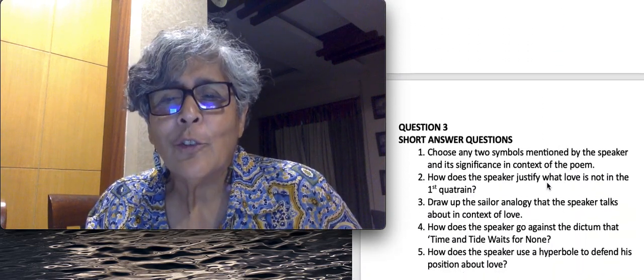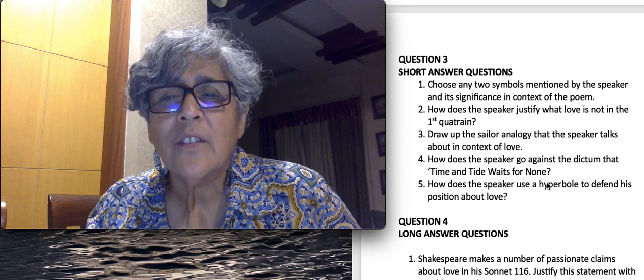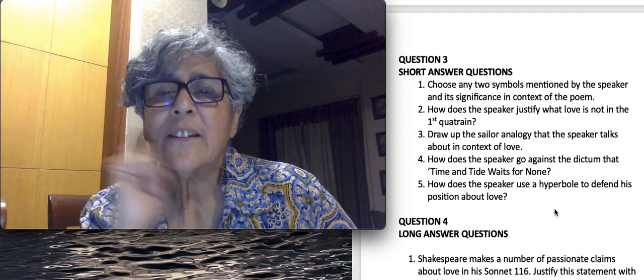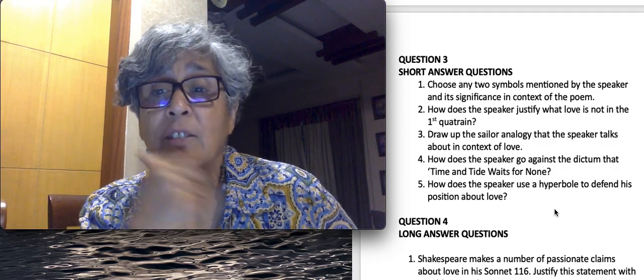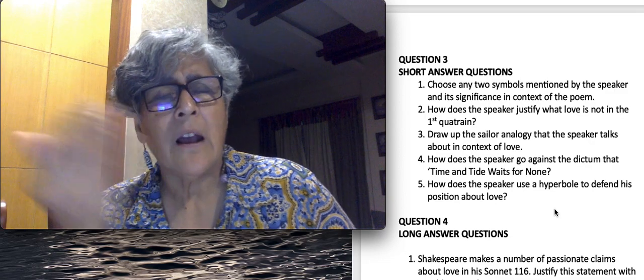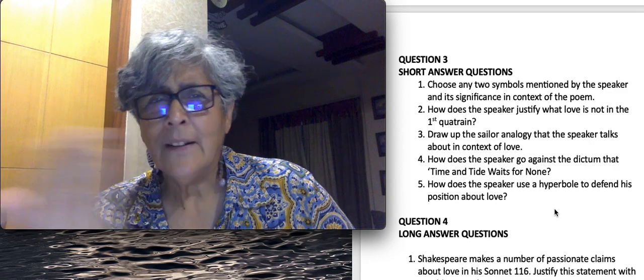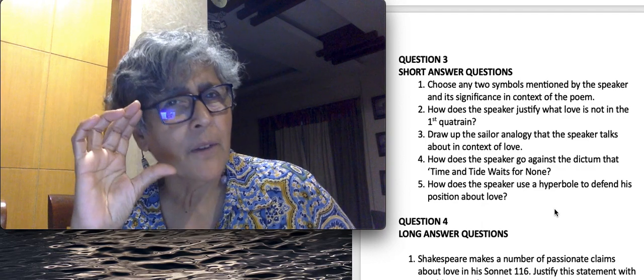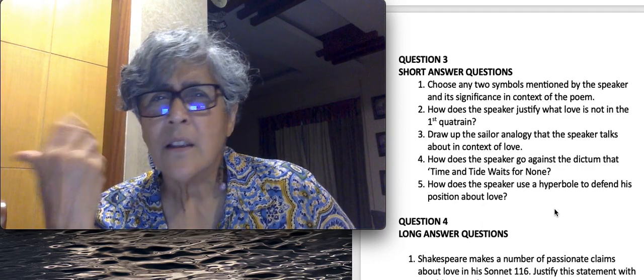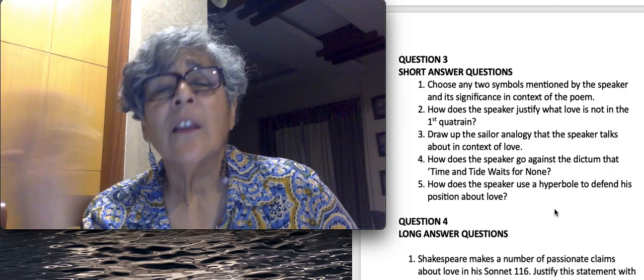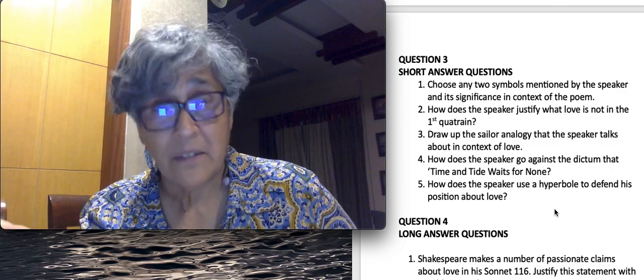Let's look at the short answer questions. Simple, direct. Choose any two symbols mentioned by the speaker and their significance in context of the poem. I'm sure you're going in for the mark and the symbol of the star, the pole star, in connection with love. But keep it short. Remember, five marks. Roughly between 50 to 70 words. Don't exceed that, please. You will end up being repetitive.